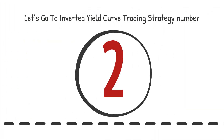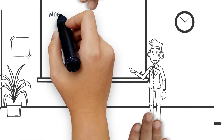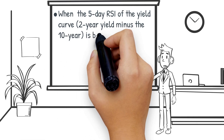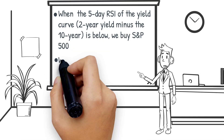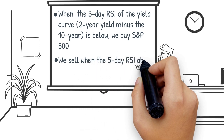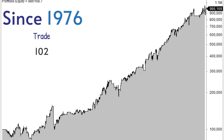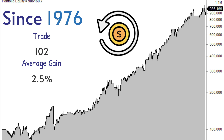Let's go to inverted yield curve trading strategy number two. The trading rules are based on mean reversion of the yield curve, and we employ the RSI indicator. There are only 102 trades since 1976. The average gain is 2.5%, and you're invested almost 3 months per trade. The return is slightly better than any random period.